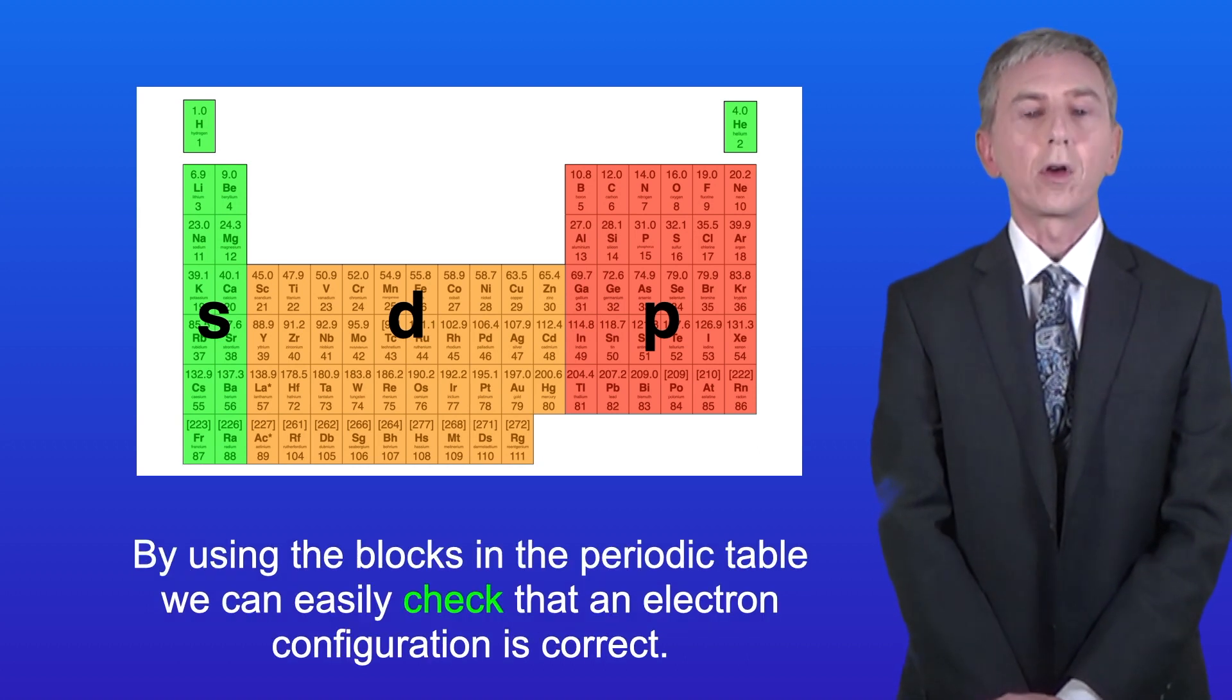Now by using the blocks in the periodic table, we can easily check that an electron configuration is correct.